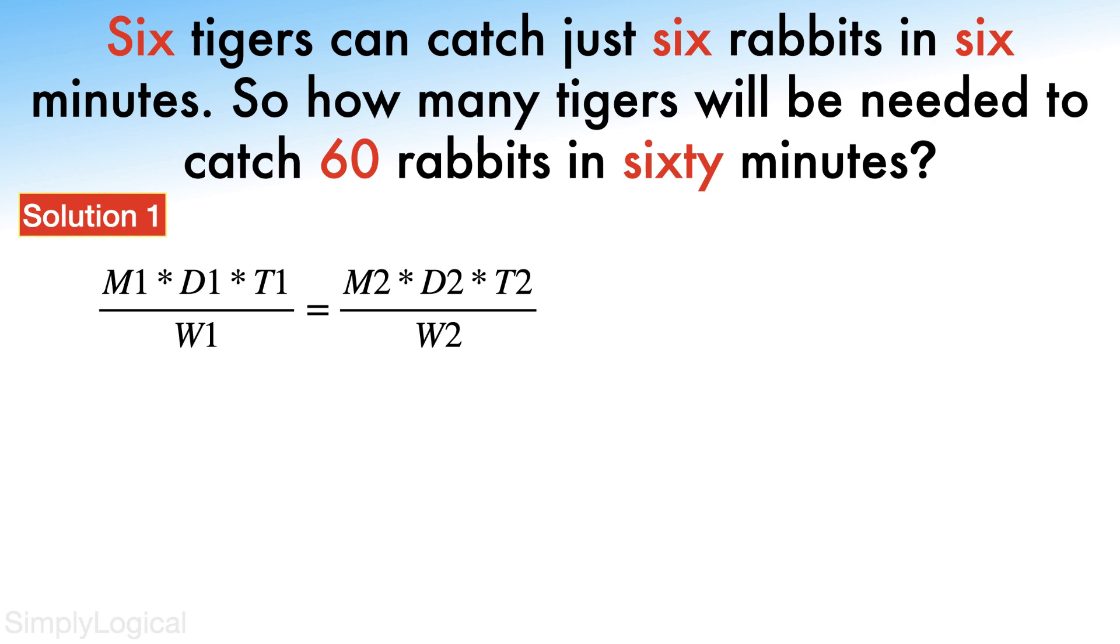For this problem there are only three variables, hence the formula can be written as M1 D1 over W1 equals M2 D2 over W2, where M is number of workers, D is number of days, hours, minutes, or seconds, and W is piece of work.